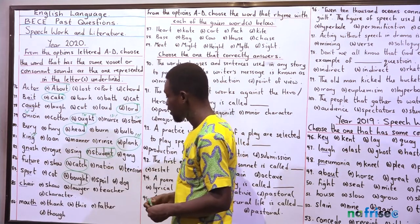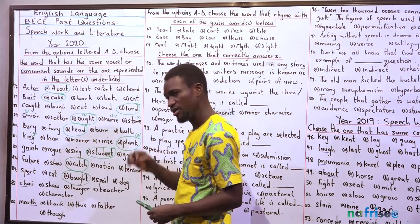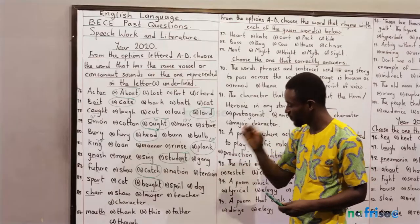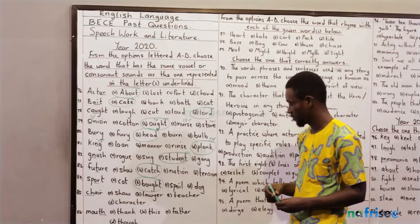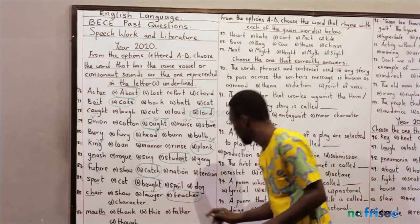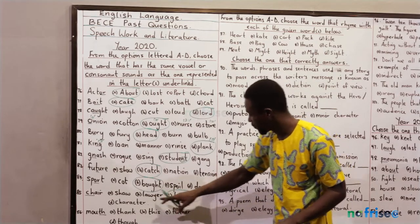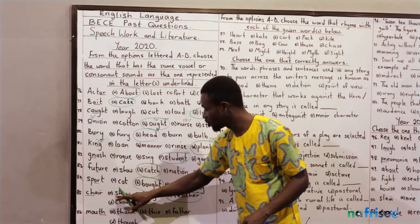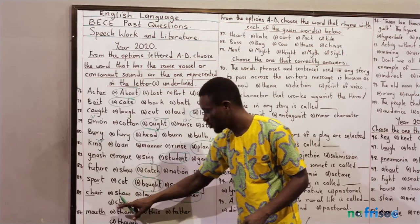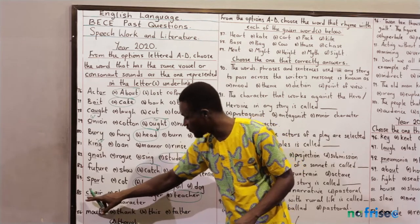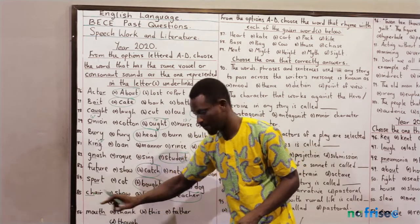Question 85 — 'chair.' That's the /tʃ/ sound. Which option has the /tʃ/ sound? That's option C — 'teacher.' Option A, 'show,' is /ʃ/. Option B is not /tʃ/ — it's /k/. Option D, 'character,' has the /k/ sound, not /tʃ/. But 'chair' is /tʃ/, not /k/.